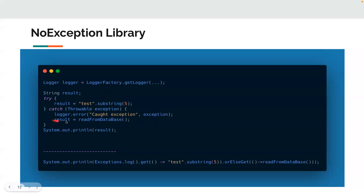What I want to do is log that exception and then get a default value from a database. Reading from a database is an expensive piece of work — it involves a lot of calls that go to the database and come back. This is a very expensive piece of logic that we are doing here.